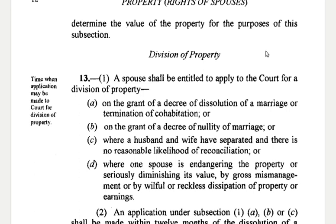Subsection 1. A spouse shall be entitled to apply to the court for a division of the property: A. On the grant of a decree of dissolution of a marriage or the termination of cohabitation; or B. On the grant of a decree of nullity of a marriage; or C. Where a husband and wife have separated and there is no reasonable likelihood of reconciliation.